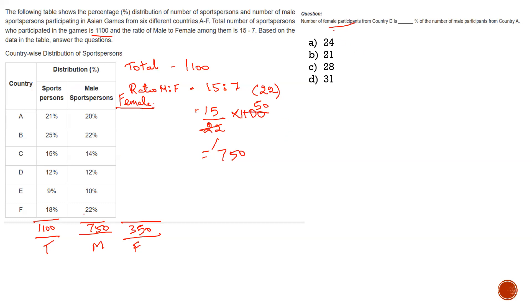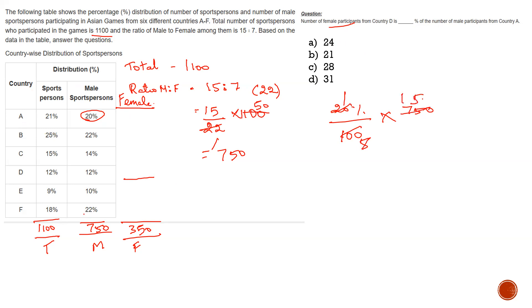We have to find the number of female participants from country D as a percentage of male participants from country A. For male participants from country A: 20% divided by 100, into 750. When I divide, I get the answer 150. So there are 150 male participants in country A.